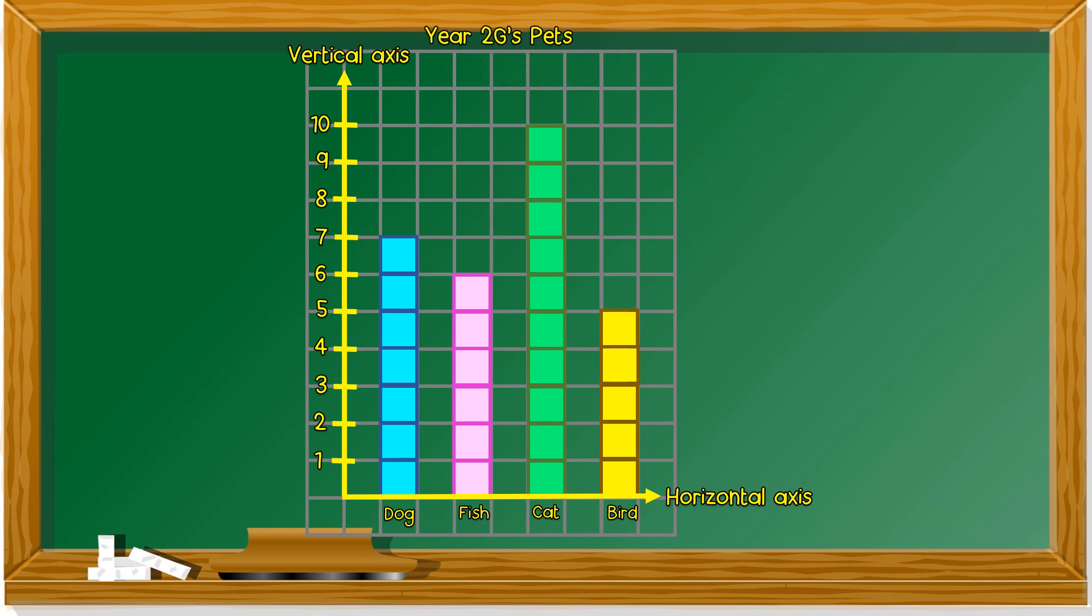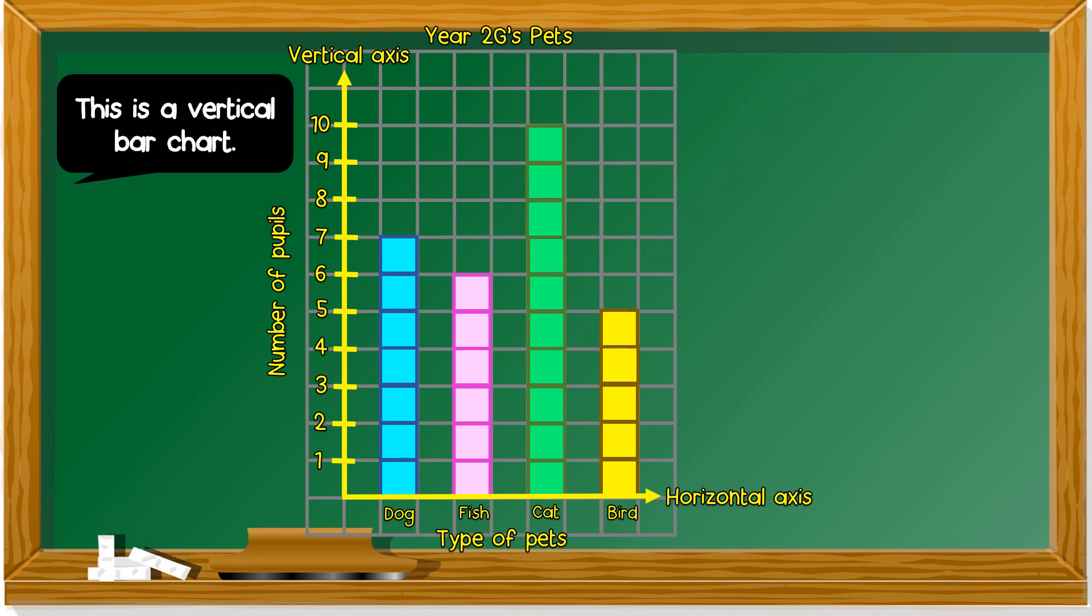So this is about year two G's pets. On the side is how many pupils, number of pupils. And below is type of pets. And these are called a bar chart. This is a vertical bar chart because all are stacked up.